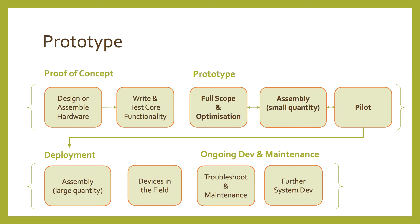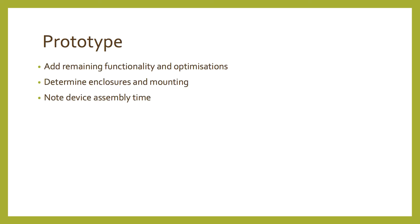Once we have the core functionality written, we start building a prototype that can be piloted in the field. At this stage, we're fleshing out the full application, adding functionality that's less critical, and adding optimizations to make the device more reliable and power efficient. In this course, once we're done establishing that we can control each sensor and it's behaving as we want it to, we'll be tying it all together into our Datalogger application and adjusting it to take the reading when we want it to. Then we'll add some finishing touches like power optimization and reliability improvements.